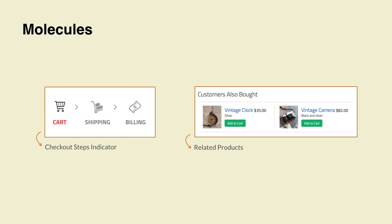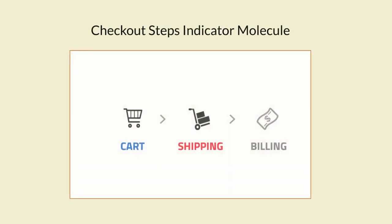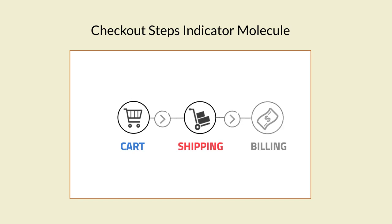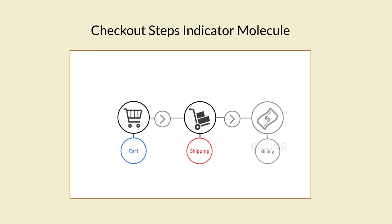Let's view the checkout steps indicator in more detail. The atoms, or inner modules, are the icons used for each step, the icons used to connect the steps, and the text used under the icons.